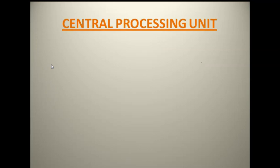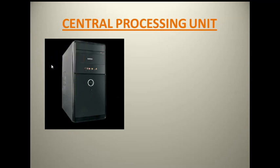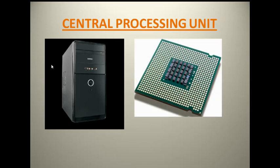The next part is CPU. The full form of CPU is Central Processing Unit. This is how the CPU looks like — this is the CPU box, and this is your CPU chip.